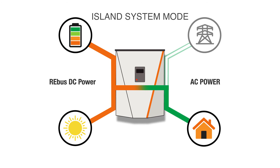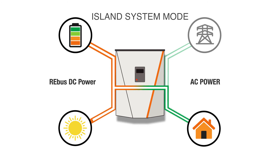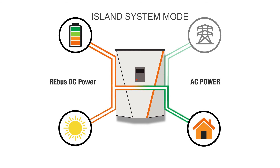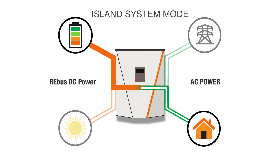Regardless of system mode, in the event of a grid excursion, PowerCell will prioritize the use of available solar energy to support protected loads and charge the battery second. When local loads demand more power than the solar array can provide — such as when the sun sets — the battery will supply additional power to support loads.